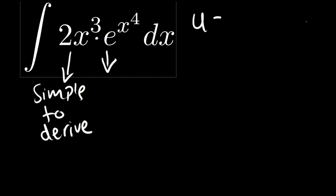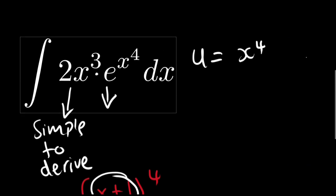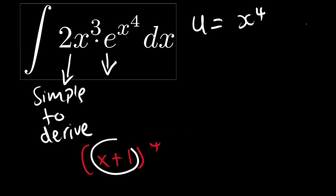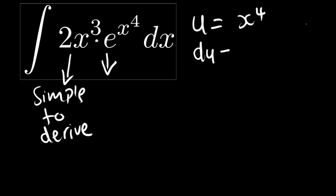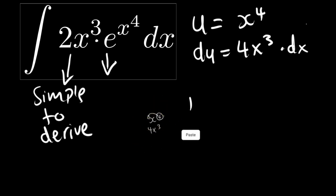In the previous question we took what was inside the brackets, but here we take what is at the exponent. So u equals x to the power four. Then we derive u with respect to x: the derivative of x to the power four is four x cubed, using the power rule — bring down the four and subtract one from the exponent.